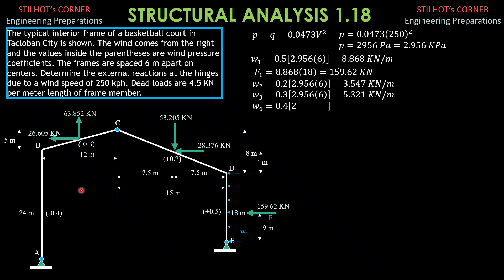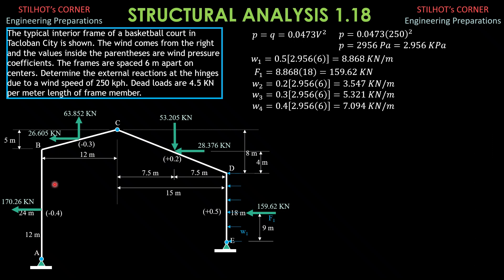W4 equals 0.4 times 2.956 times 6, giving 7.094 kilonewtons per meter. This is suction, so it is leftward. F4 equals 7.094 times the vertical projection of 24, which is 170.26 kilonewtons. It acts 12 meters from A vertically and 12 meters from B vertically as shown in the figure.